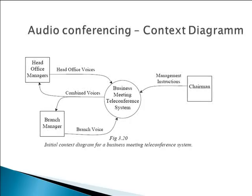Here's a context diagram depicting an audio conference. You can see we have head office managers, a branch manager and a chairman, and they all feed into the system — the circle being the business meeting teleconference system. The voices of the head office managers are inputs to the system, as are the branch voices, and the chairman is relaying instructions down to management. Information flows to and from the system to the external entities. Remember, context diagrams are a good way of summarizing a system such as audio conferencing.